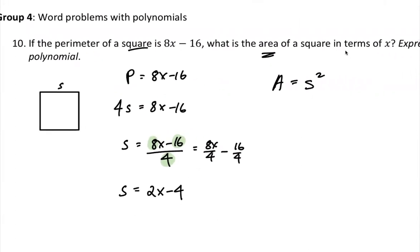So you have the side as 2x minus 4. So what you want to do is to put the 2x minus 4 into the s, and then you have to distribute them or you do the FOIL right here. So you will have 4x squared and then minus 16x and then plus 16.